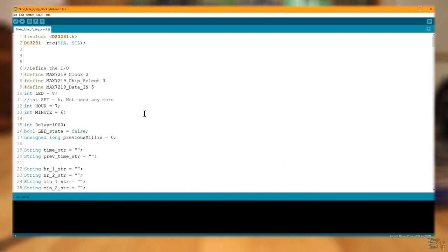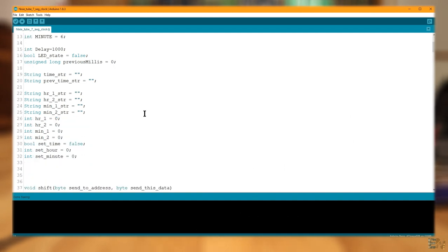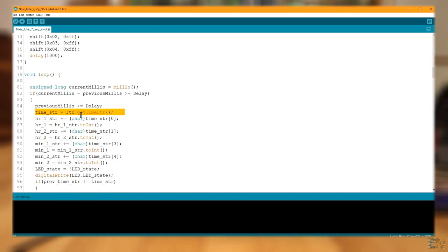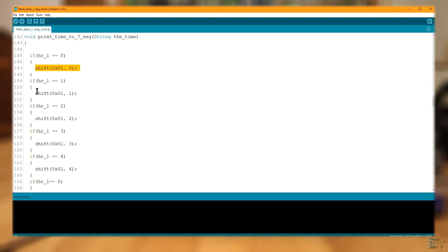Now download the second code, for the 7-segment clock. This code will get the hour from the real-time module. Then it will shift the data to the 7-segment display driver and by that will show the time.